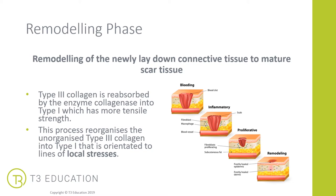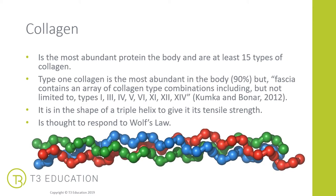We're going to talk about the local lines of stresses alongside collagen. Collagen is the most abundant protein in the body, and there are at least 15 different types of collagen that have been recorded. However, the Cum-Carma-Bona study suggests there are at least 25 different types of collagen, so the research is still inconclusive.